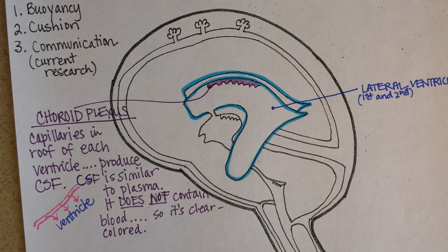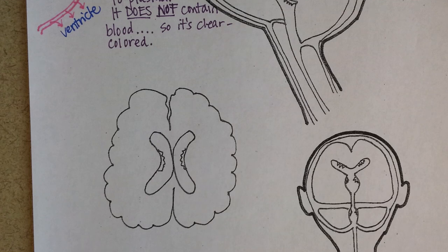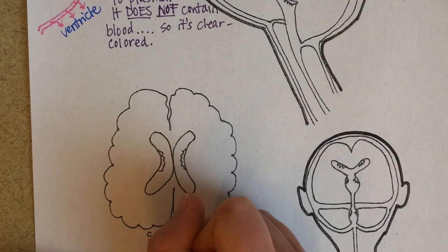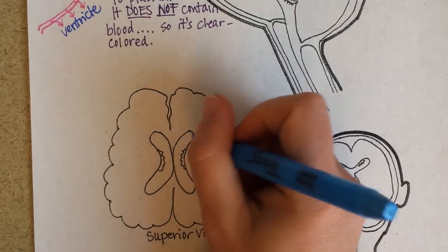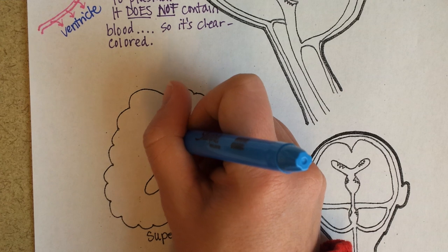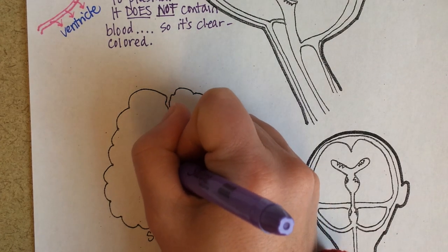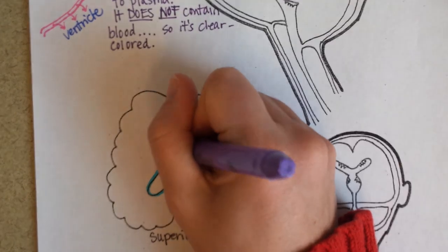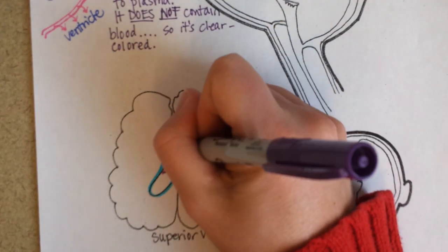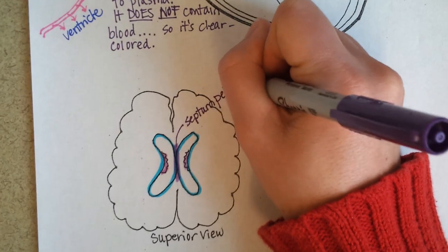Now we'll look at another view of the lateral ventricles — a transverse section, or superior view looking down. Can you see them? Here is one, and here is the other, and here are those capillaries that make the fluid. The separation between the two ventricles is called the septum pellucidum — septum meaning a wall, and pellucidum meaning clear to look at.